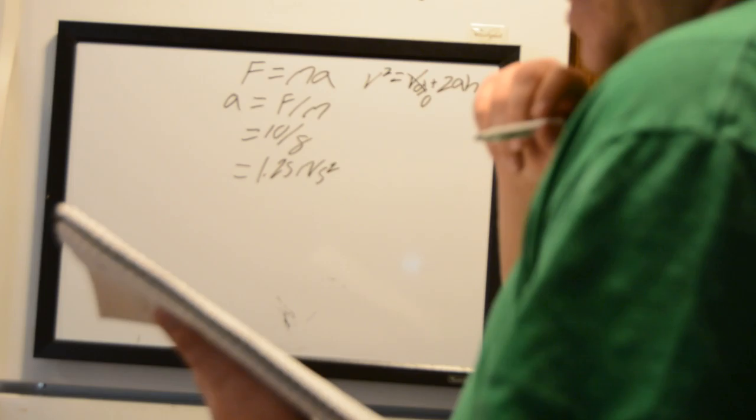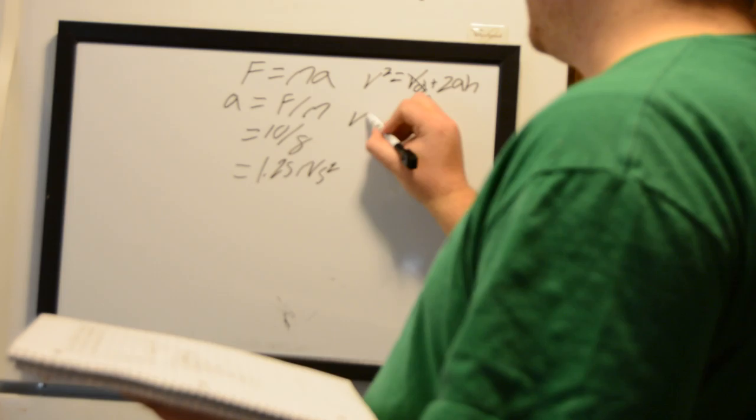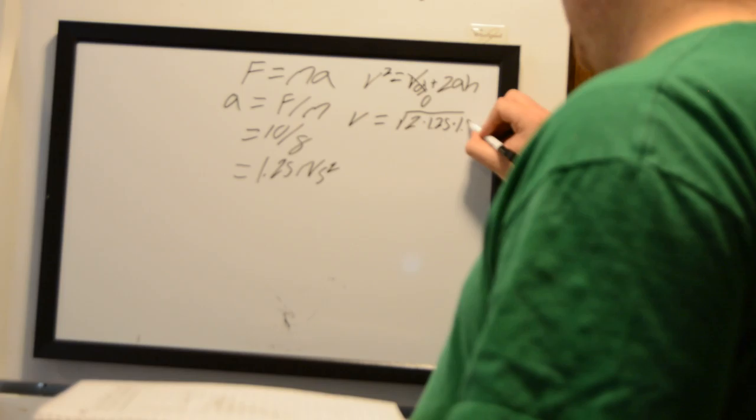And what we're trying to find in this case is our velocity. So we can just set velocity equal to the square root of 2 times our acceleration here, 1.25 meters per second squared, times our distance, which once again is 1.5 meters.